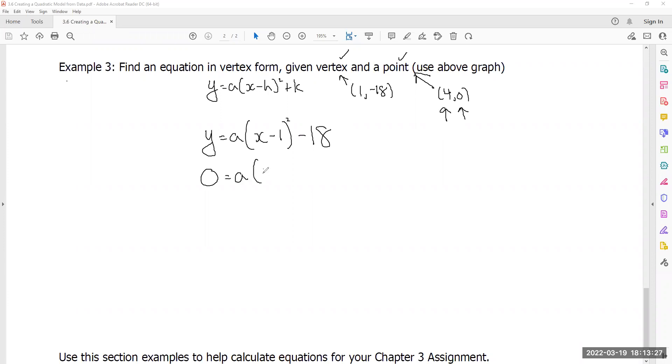So that is a times, 4 minus 1 is a 3, 3 squared is 9. Let's bring 18 to the other side. So this becomes 18. So plus 18 plus 18. And this is 9a. 9, to get it all alone, divide both sides by 2. Bam. Therefore, my vertex form is 2(x - 1)² - 18.